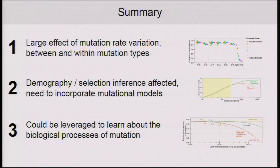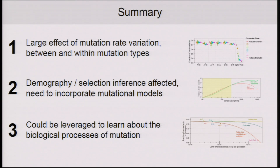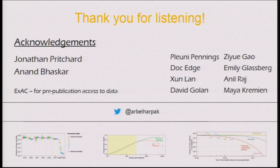In summary, we saw that mutation rate variation has a substantial effect on the SFS. We discussed the fact that downstream inference would be very much affected by this variation, and therefore we should rethink the way that we incorporate mutation into these inference schemes. Additionally, we can leverage the signature that mutation rate variation leaves on the SFS to learn something back about the biological process of mutation itself. I'd like to acknowledge Jonathan and Anand again, and also the organizers for this wonderful conference and everyone who helped put this together. I'll be happy to take any questions.